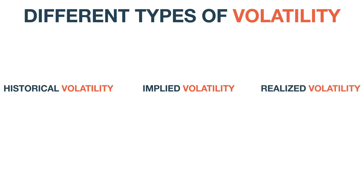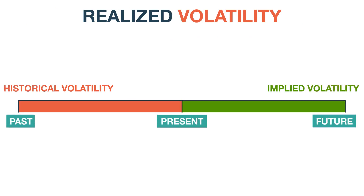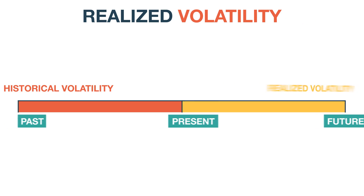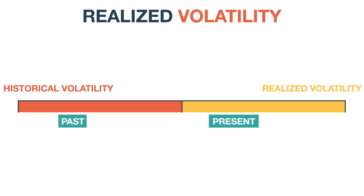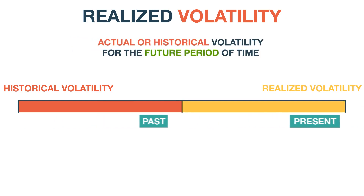Realized volatility is also referred to as historical volatility. Unlike implied volatility, which tells us the expected variance in a future time period, realized volatility tells us the actual or historical volatility for that future period of time.